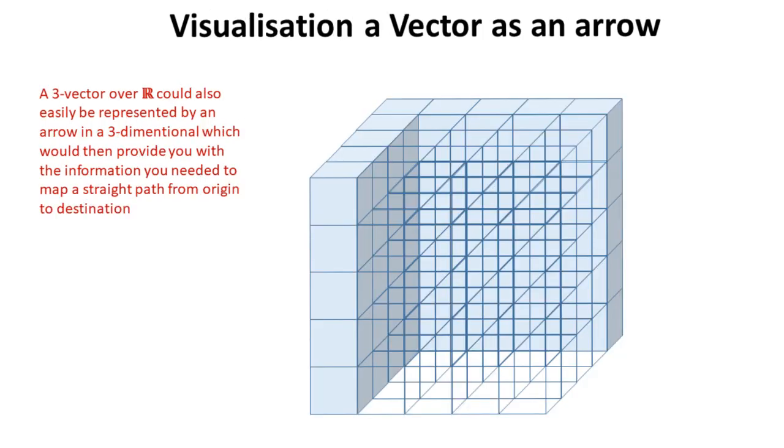A 3-vector over R could also easily be represented by an arrow in a three-dimensional space, which would then provide you with the information you needed to map a straight path from origin to destination.